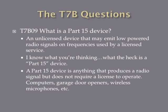What is a Part 15 device? A Part 15 device is an unlicensed device that may emit low-powered radio signals on frequencies used by a licensed service. Examples include automatic garage door openers, some TV remotes, microwaves, and wireless microphones. Anything that produces a low-powered radio signal that you do not need a license to operate is generally a Part 15 device.